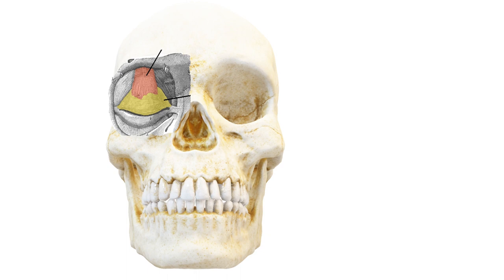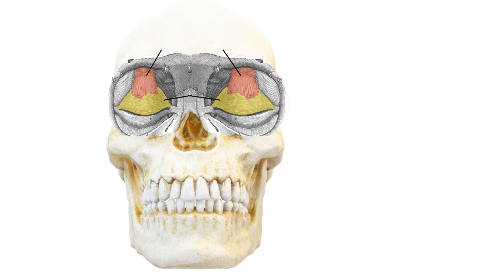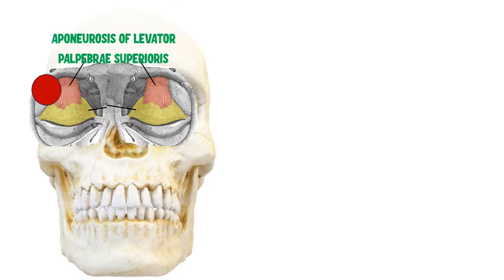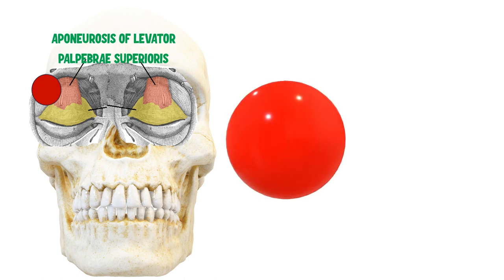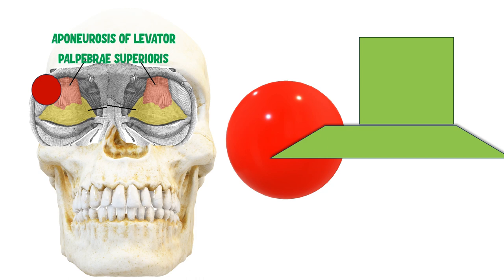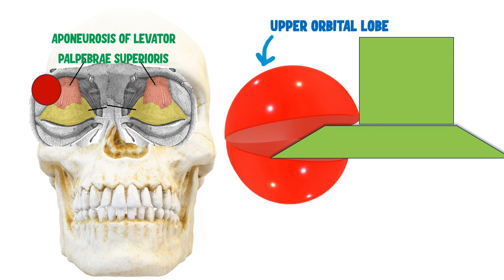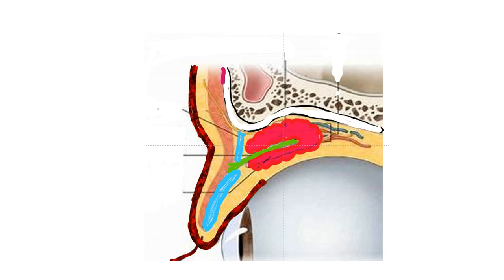But how are they divided? Consider this to be our bony orbit with the eyelids on top. The two muscles you see are the aponeurosis of the levator palpebrae superioris. The circle represents the lacrimal gland in red. As the levator palpebrae superioris comes from behind, it splits open the anterior half of the lacrimal gland and divides it into two parts: the upper orbital lobe and the lower palpebral lobe. However, the posterior part of the lacrimal gland is intact and not divided.